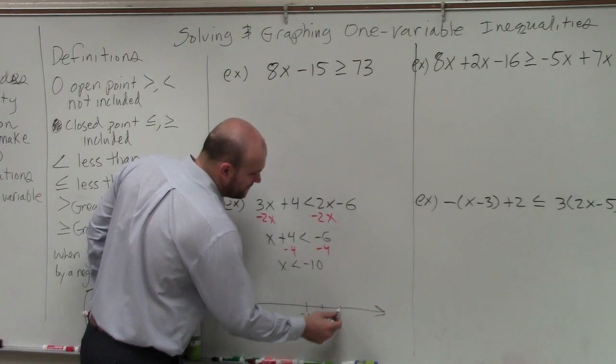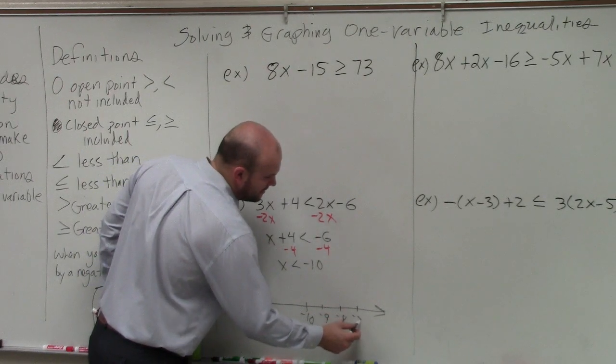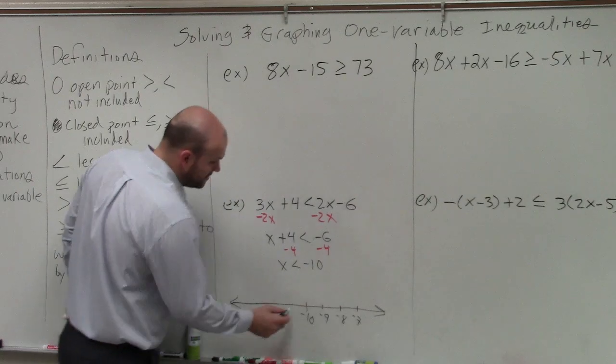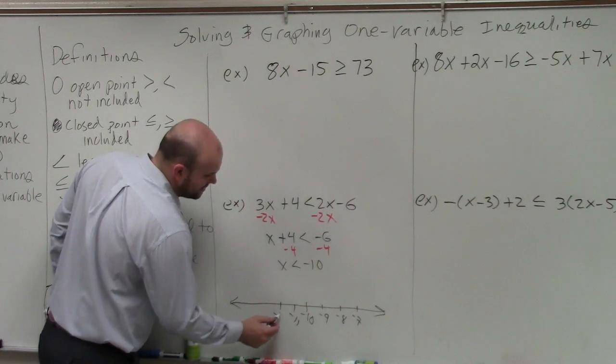So this one would be like negative 9, negative 8, negative 7. These are all values that are greater. And these are values that are less.